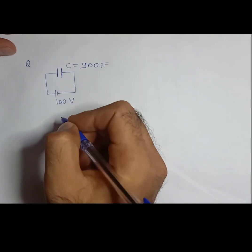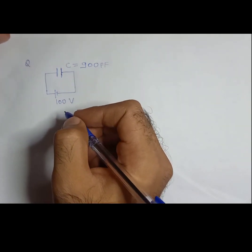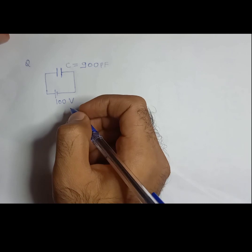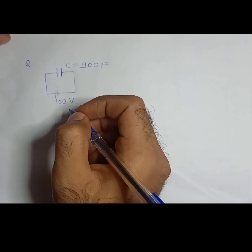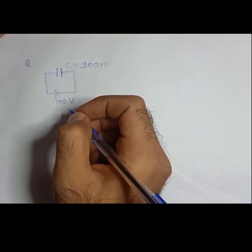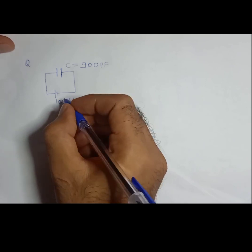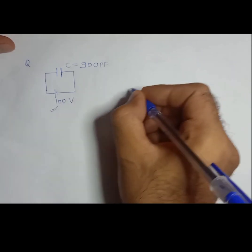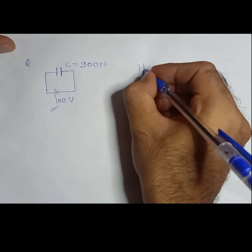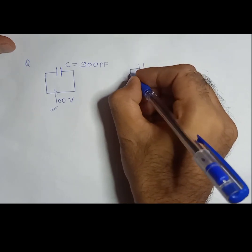This is a battery, 100 volt. So a capacitor, what does it do? It stores charge, right? And then what you are doing is it is disconnected from the battery and connected to a discharged capacitor of same capacitance.